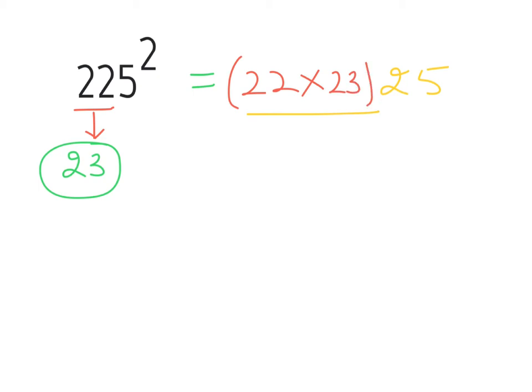Now how about if we practice one more question. So 225 square. Next number to 22 is 23. Now first let's put 25 at the end so that it's clear to us. So now 25, now in front we write 22 times 23 as 23 is the next number. So first let's multiply 22 and 23 separately.